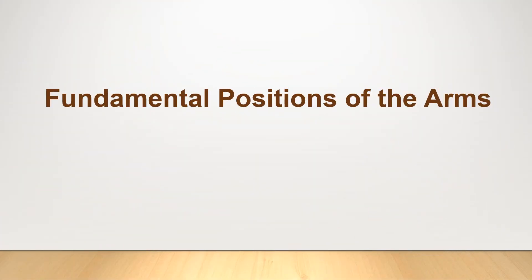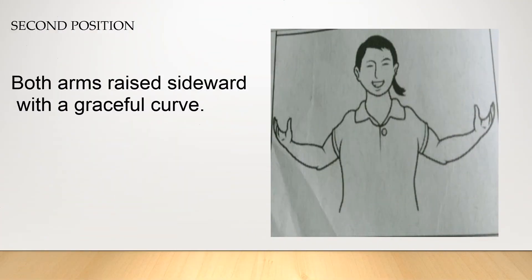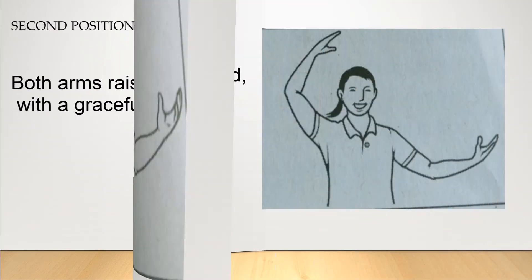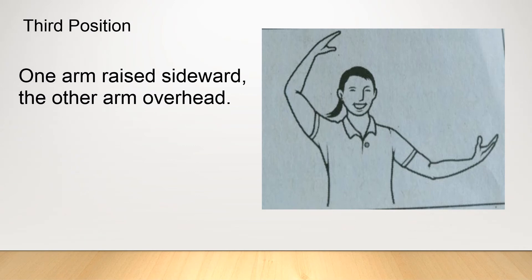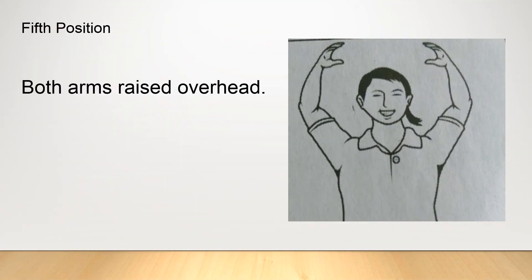Fundamental positions of the arms. First position: encircle both arms in front of chest with the fingertips about an inch apart. Second position: both arms raised sideward with a graceable curve. Third position: one arm raised sideward and the other arm overhead. Fourth position: one arm in a half circle in front, other arm raised overhead. Fifth position: both arms raised overhead.